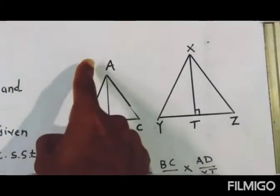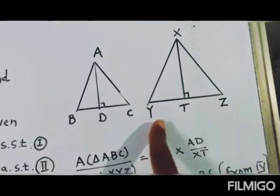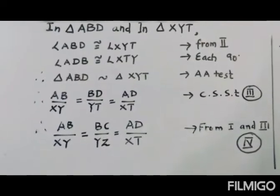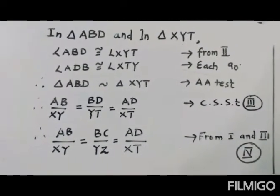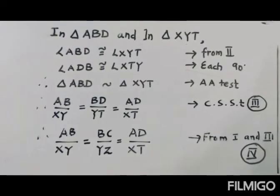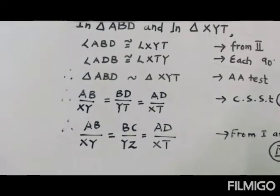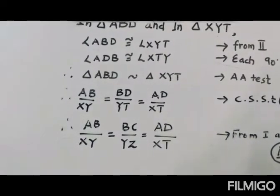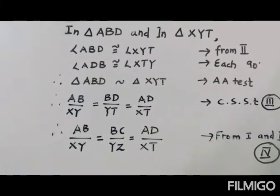Triangle ABD is similar to triangle XYT, by the AA test. Whenever two triangles are similar their sides are in proportion. So the sides of ABD and XYT give us: AB upon XY equals BD upon YT equals AD upon XT. Let us give that number three.